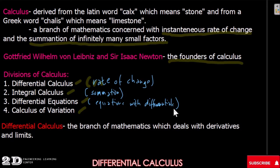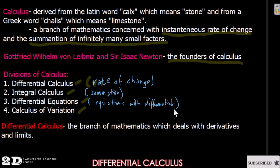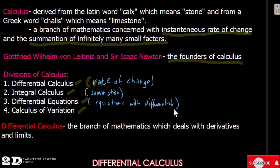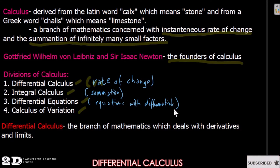Calculus of variation tackles how a certain function or phenomenon will behave if we cause a change in the equation itself — that is why it is called 'variation.' While we have a concept of variation in algebra, in this division of calculus we are trying to determine what the effect will be when that variation occurs on the differentials themselves.